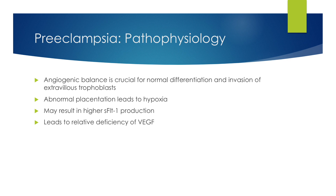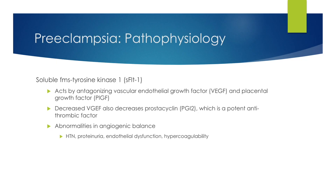The angiogenic balance is crucial for normal differentiation and invasion of extravillous trophoblast. Abnormal placentation leads to hypoxia, which may result in higher S-FLIT1 production. This leads to a relative deficiency of vascular endothelial growth factor. Soluble FMS tyrosine kinase 1, or S-FLIT1, acts by antagonizing vascular endothelial growth factor and placental growth factor. Decreased VEGF also decreases prostacyclin, a potent antithrombotic factor. These abnormalities in angiogenic balance can lead to hypertension, proteinuria, endothelial dysfunction, and hypercoagulability of preeclampsia.